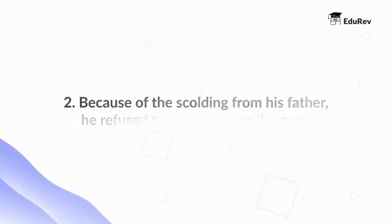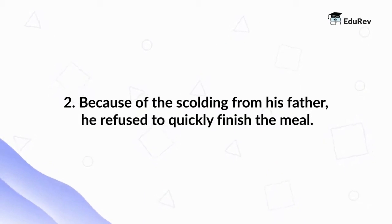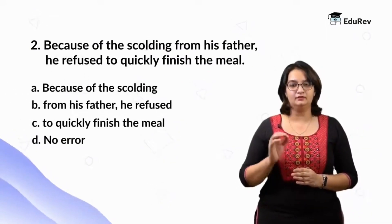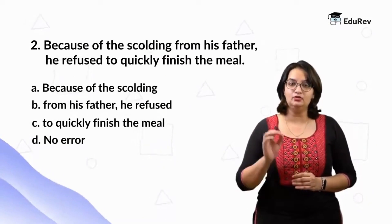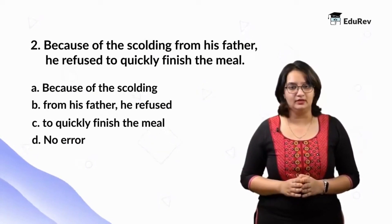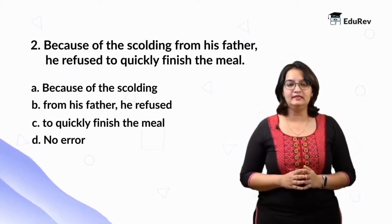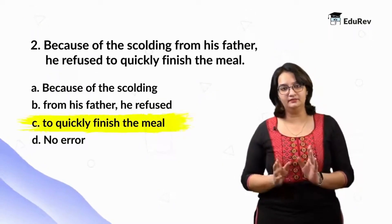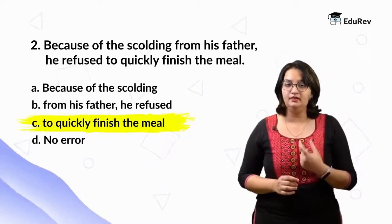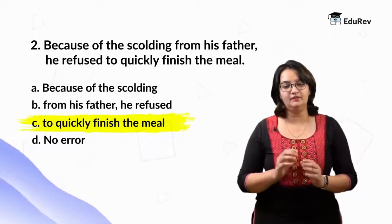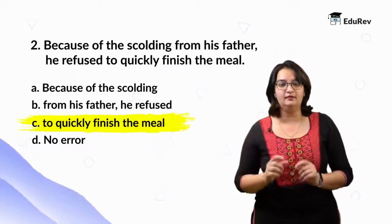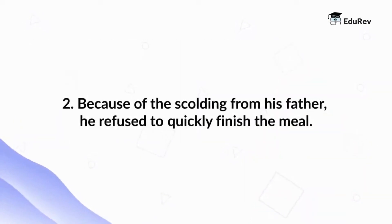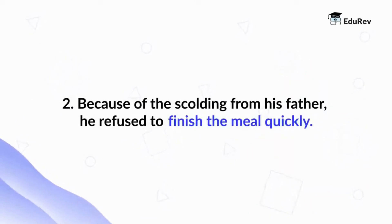Let us take a look at this example: Because of the scolding from his father, he refused to quickly finish the meal. Option A: because of the scolding. Option B: from his father, he refused. Option C: to quickly finish the meal. Option D: no error. In this statement, we see an error known as a split infinitive. What is happening is that between the to and the infinitive, there is an adverb coming in between. We do not use adverbs in this manner. We have to replace quickly and place it so that the two parts of the infinitive stay together. The correct answer is: Because of the scolding from his father, he refused to finish the meal quickly.